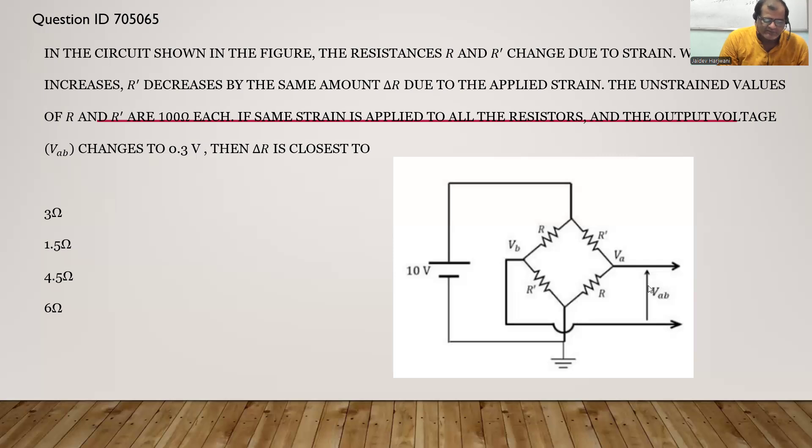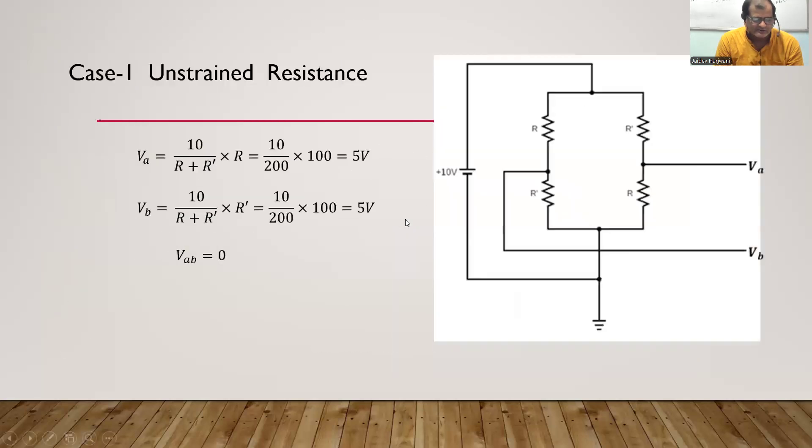But now if you apply the strain, R will become R plus delta R and R' will become R minus delta R. So in this case the developed voltage is 0.3 volts, so we have to calculate the value of delta R. Let us see how to calculate.